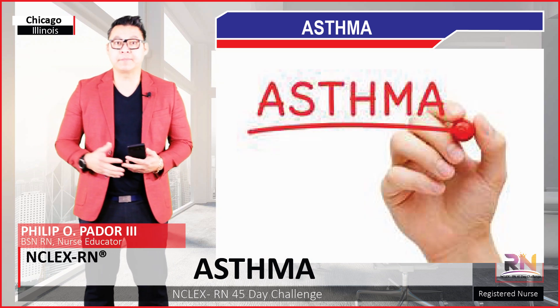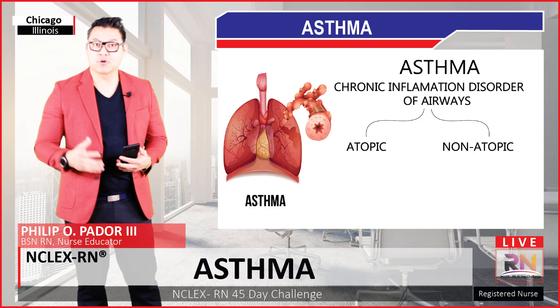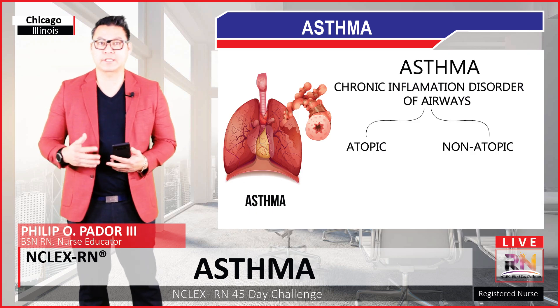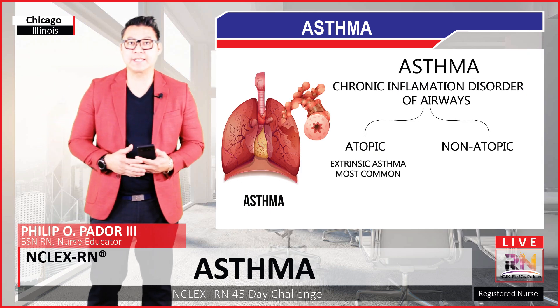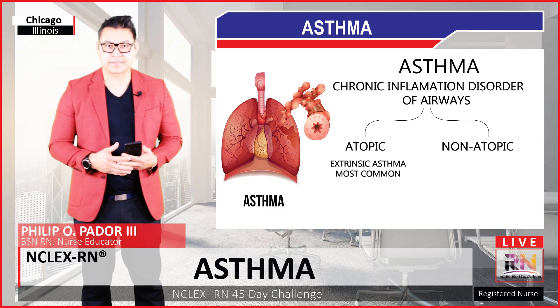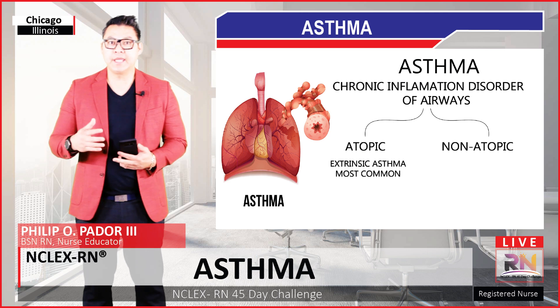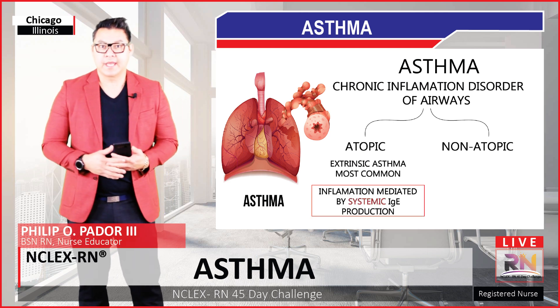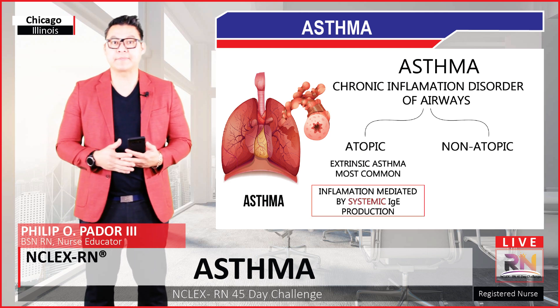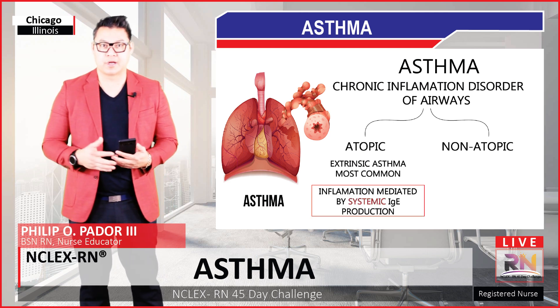Asthma can be divided as either atopic or non-atopic. Atopic asthma is extrinsic asthma, meaning it's triggered by the environment, and this type of asthma is the most common.